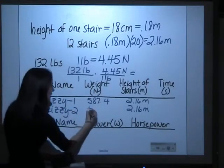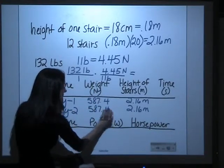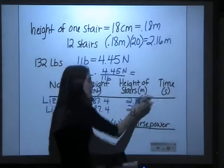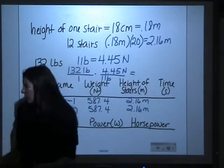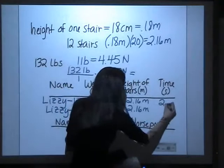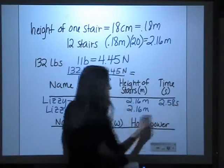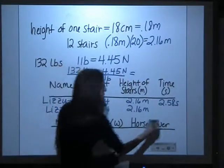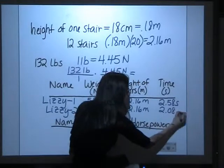Since that was the same for both of these trials, we record that there. The next thing we'll need to record is the average time, and I said that before. The average time for her first trial was 2.58 seconds, and the average time for her second trial was 2.08 seconds.